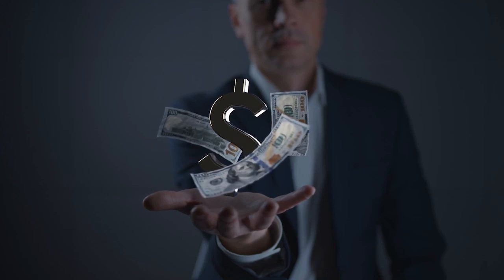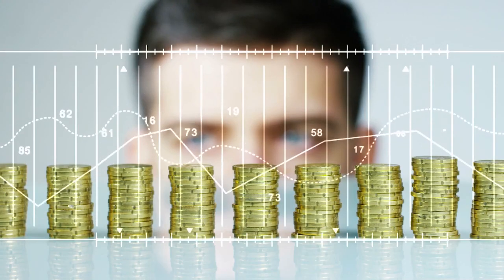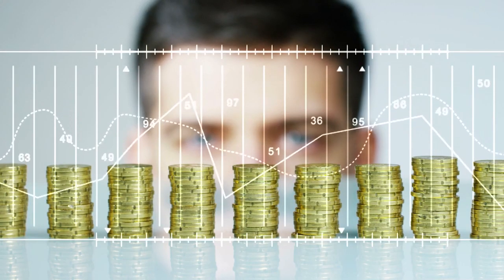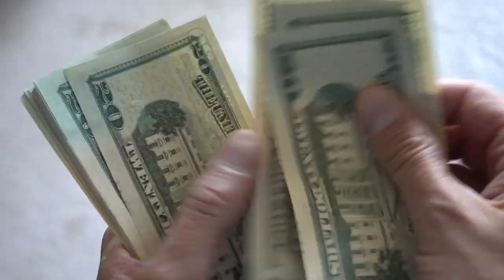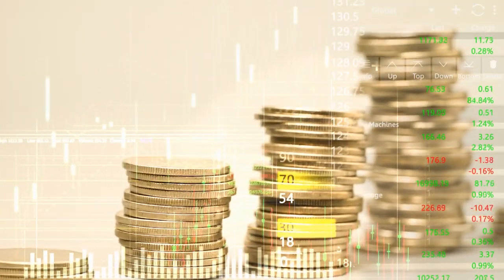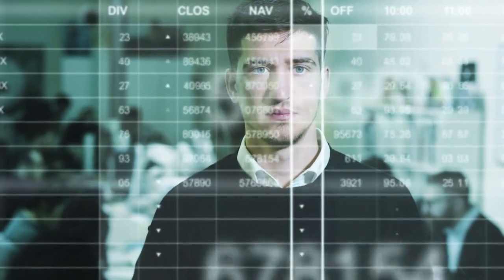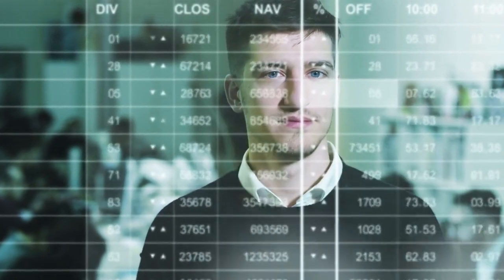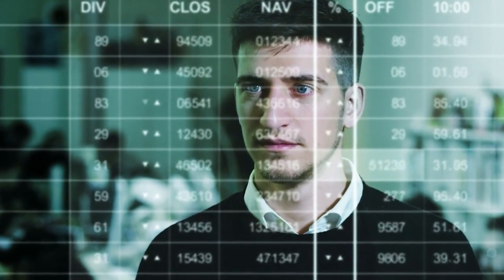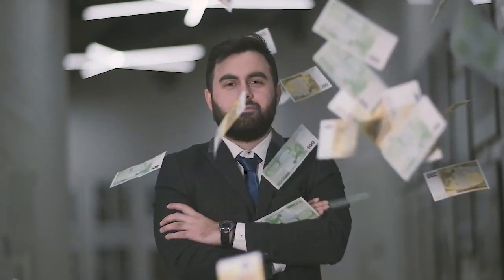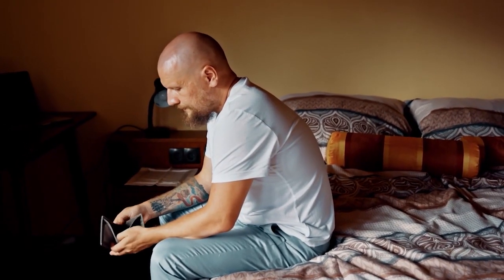The wealthy comprehend this shift in the money system, and they act accordingly by constantly directing their money towards assets with tangible value. They invest their money in assets that generate cash flow, allowing them to reinvest in even more assets. This concept is known as the velocity of money, and it plays a significant role in why some people become rich while many others struggle to build wealth.